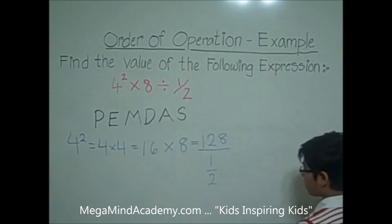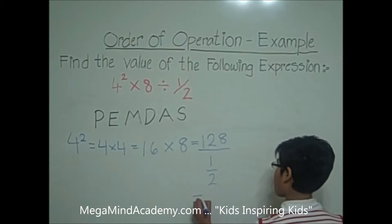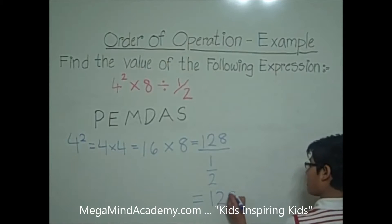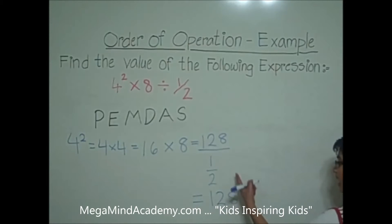So, it's equal to 128 times the reciprocal of 1 half, or 1 over 2, which is equal to 2 over 1. That is the reciprocal of 1 over 2. So, we get 128 times 2 is equal to 256.